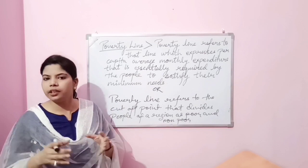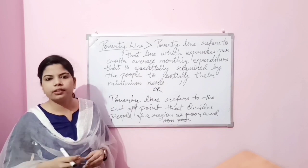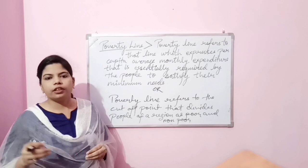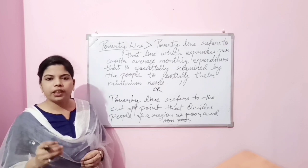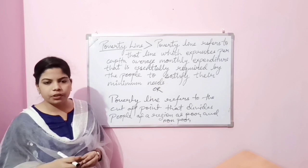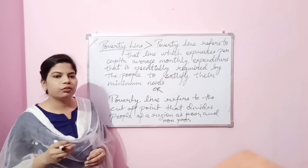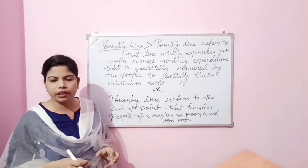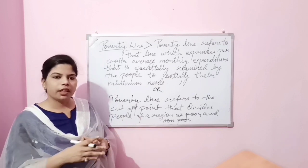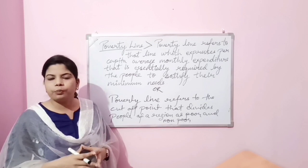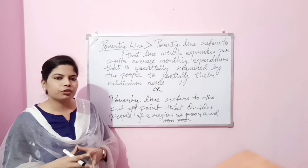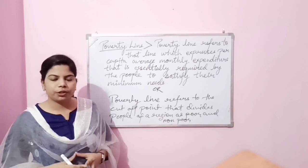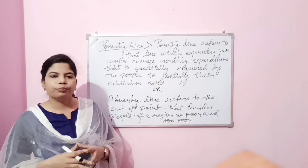The percentage of population living below poverty line is known as the headcount ratio. In India, according to 2011-12 data, 21.9% of people belong to below poverty line. In rural areas, 25.9% of people are below poverty line, and in urban areas, 13.9% of people belong to below poverty line.